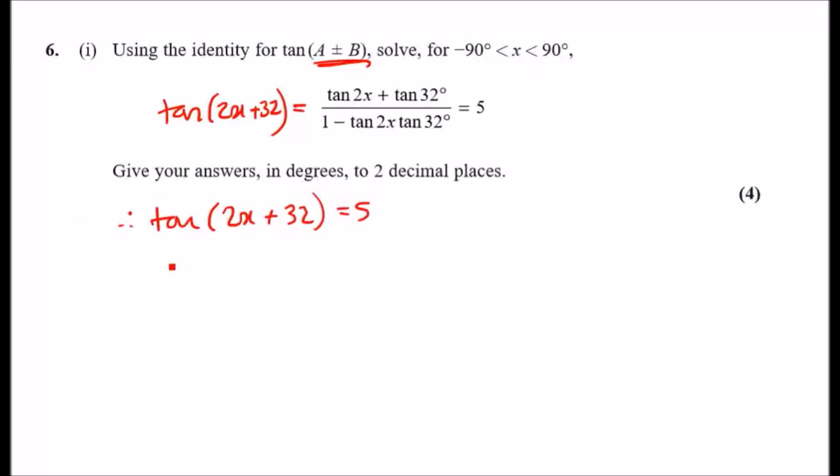To solve this, take tan inverse. Therefore, 2x + 32 equals the tan inverse of 5. Let's go ahead and tan inverse it—keep your answers in degrees mode. Tan inverse of 5, to two decimal places, is 78.69 degrees.